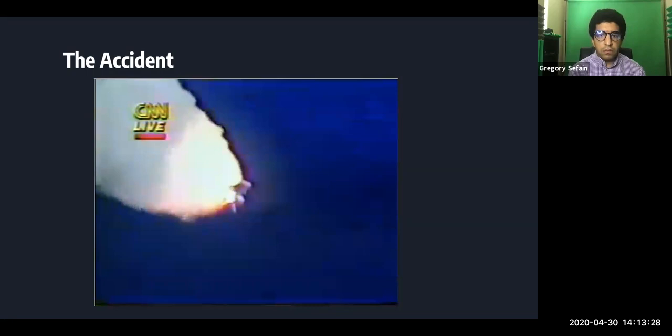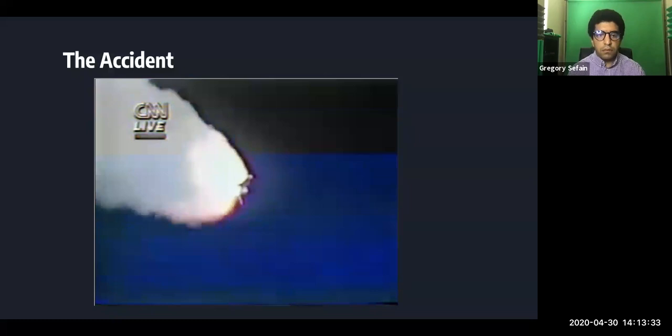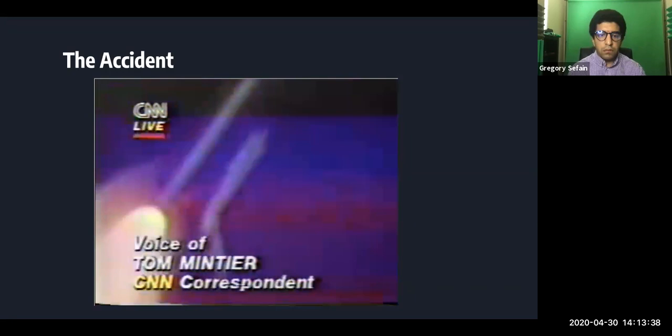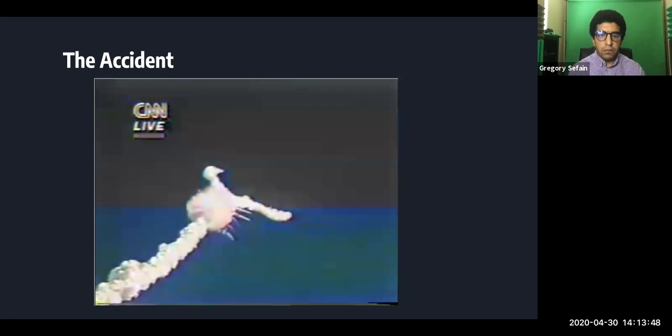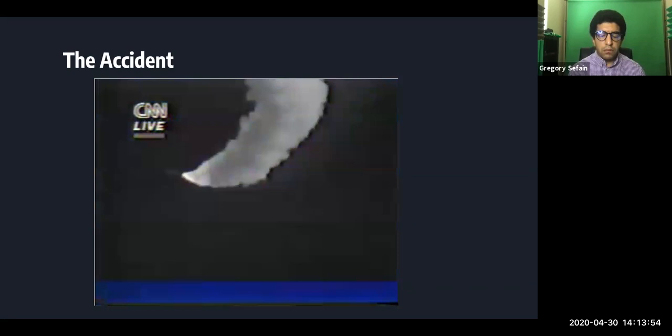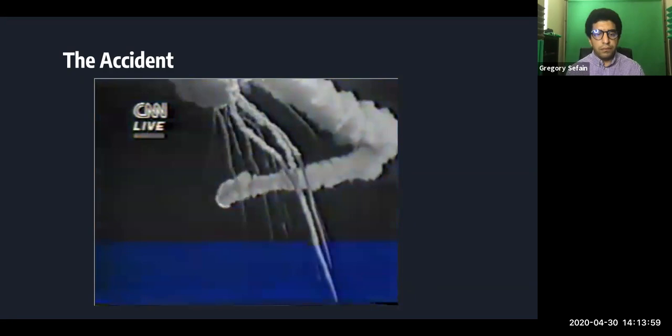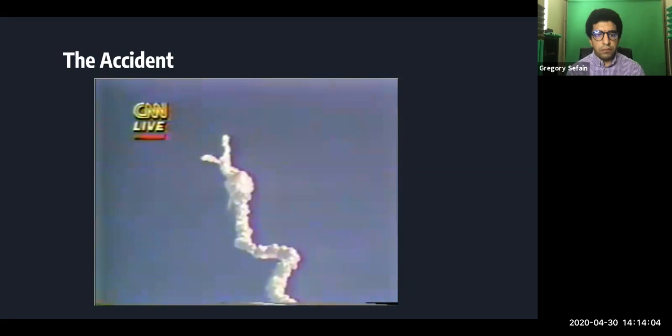So the 25th space shuttle mission is now on the way after more delays than NASA cares to count. This morning, it looked as though they were not going to be able to get off. 1 minute 15 seconds. Velocity 2900 feet per second. Altitude 9 nautical miles. Downrange distance 7 nautical miles. It looks like a couple of the solid rocket boosters blew away from the side of the shuttle in an explosion.